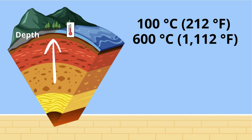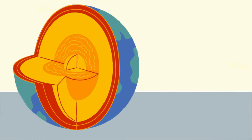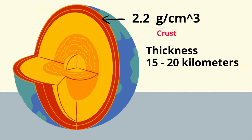Again, temperature increases as you go deeper into the crust. Its density is the least dense of all the layers. It is 2.2 grams per centimeters cubed. The average thickness of the crust is around 15 to 20 kilometers.